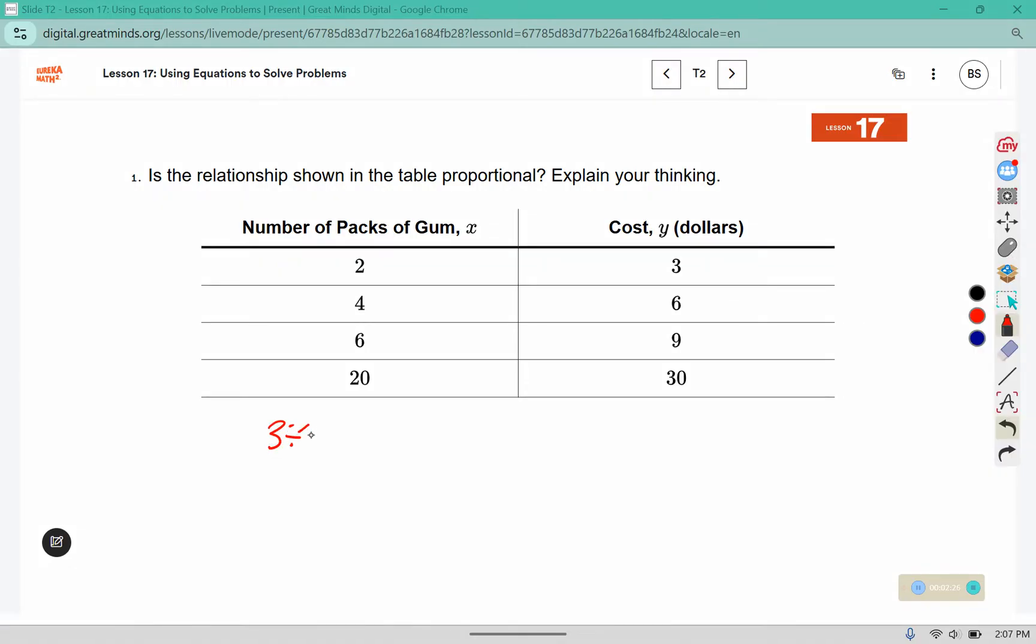So 3 divided by 2, 6 divided by 4, and 9 divided by 6, and 30 divided by 20 should all come out to the same value for them to be proportional. Well, 3 divided by 2 is 1.5. 6 divided by 4 is also 1.5. 9 divided by 6 comes out to 1.5. And 30 divided by 20 is also 1.5. So is this proportional? Yes.